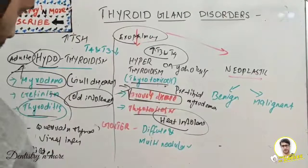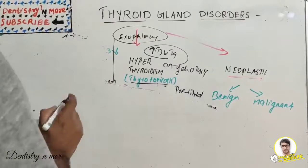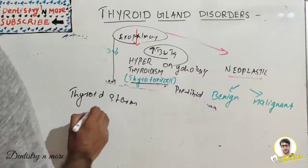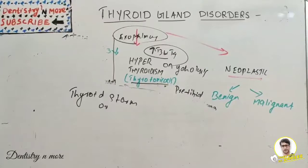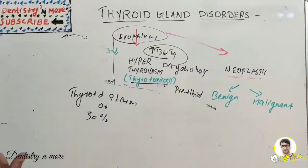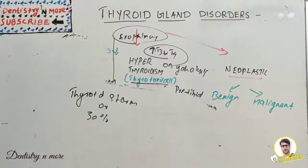One more condition in hyperthyroidism is thyroid storm or thyrotoxic crisis — a life-threatening exacerbation of thyrotoxicosis accompanied by fever, delirium, seizures, coma, vomiting, and jaundice, with a mortality rate up to 30%. It is usually precipitated by acute illness such as stroke, infection, trauma, or diabetic ketoacidosis, presenting with severe tachycardia.